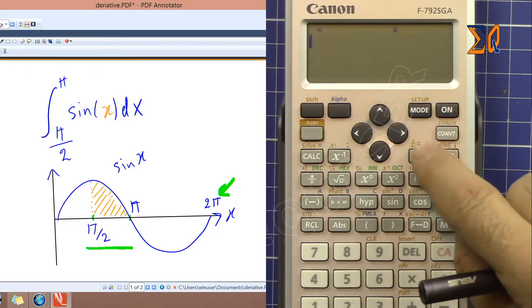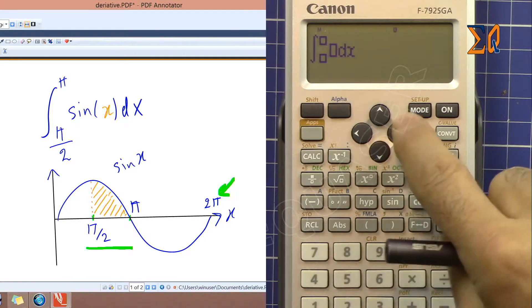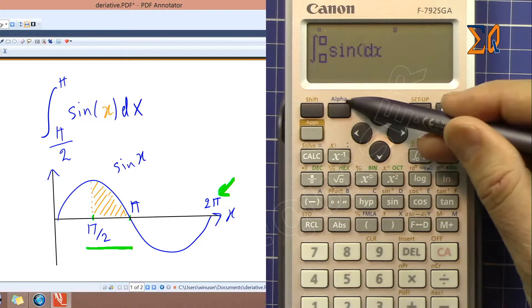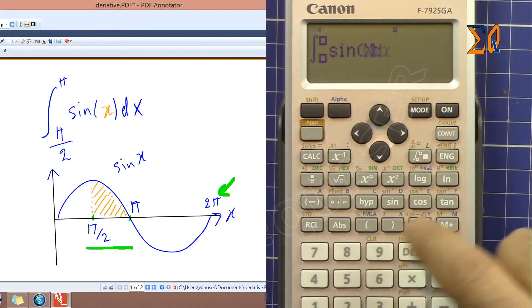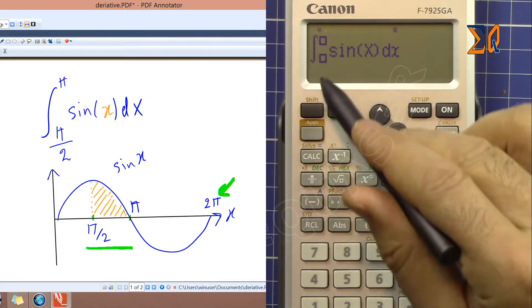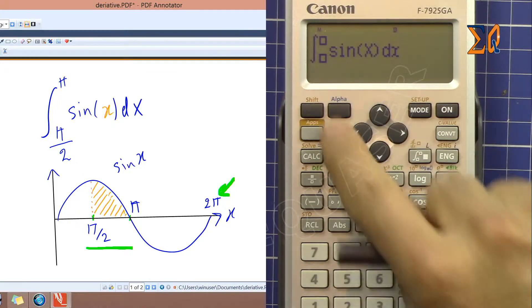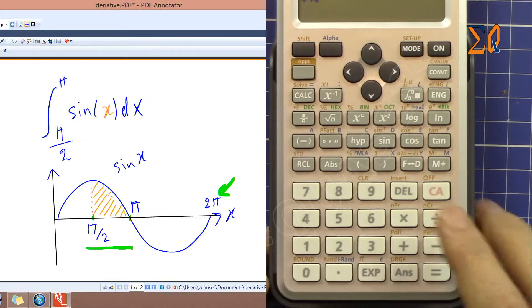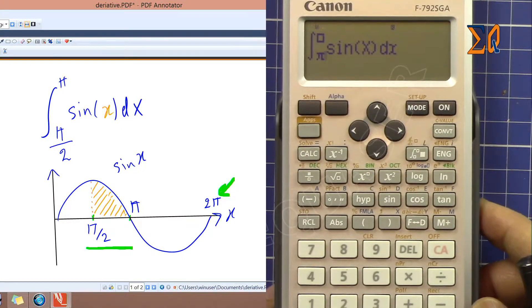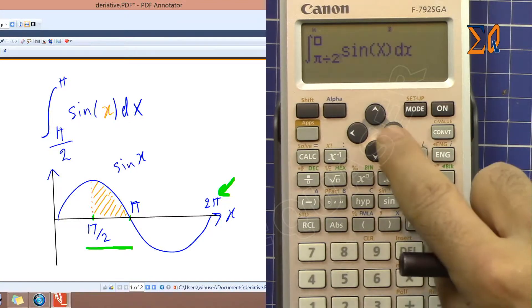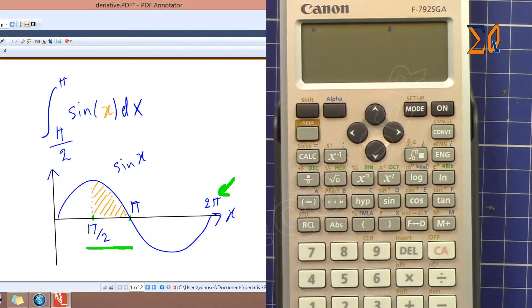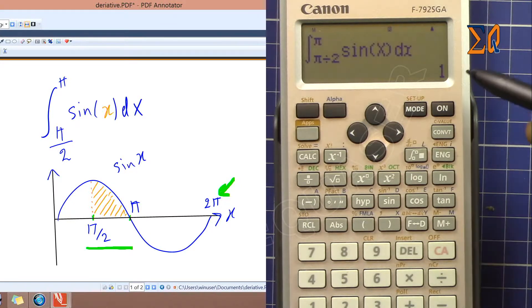Now the calculator is ready. Enter our function: sine of X. This blue X will activate with alpha. Alpha X, and then close it with the right arrow. Go to the right, it will move here. So pi over 2: shift pi for pi, divided by 2. And then with arrow go to the right, it goes up. Then shift pi. Press equal sign.